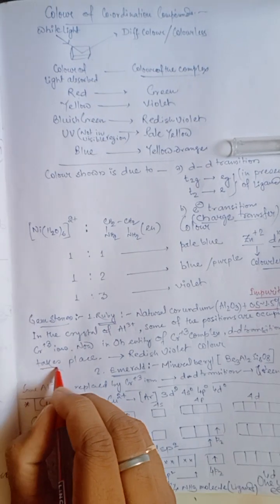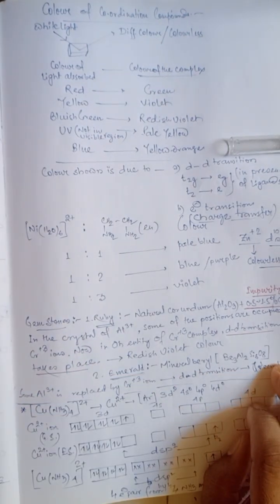So, here, DD transition occurs for chromium 3 plus ion. As DD transition takes place, we get red is violet color of the ruby stone.